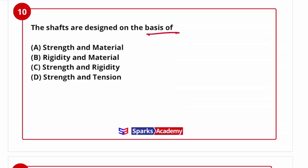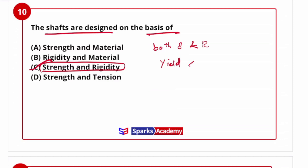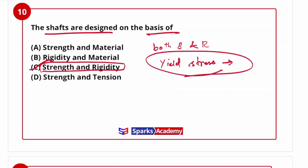Next: on what basis is a shaft designed? The shaft is designed on the basis of both strength and rigidity. The torsion stress must not exceed the yield stress at any section. Comparing options: strength and rigidity together is the correct basis for shaft design.